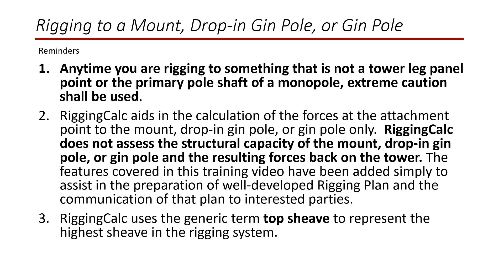Note that rigging to a jimple, drop-in jimple, or mount is not available for all rigging configurations. Currently, you can rig to a mount or drop-in jimple for Type A straight tag and Type C trolley one-part rigging configurations, and you can rig to a jimple for Type B top and heel block one-part configurations. We anticipate adding additional configurations in the future.